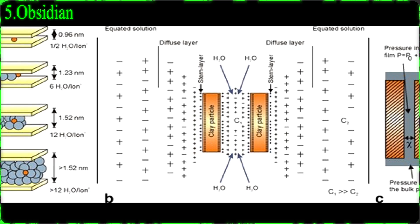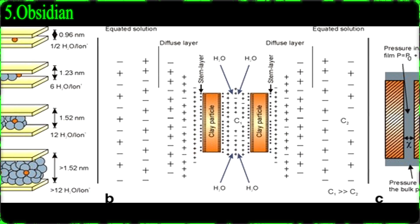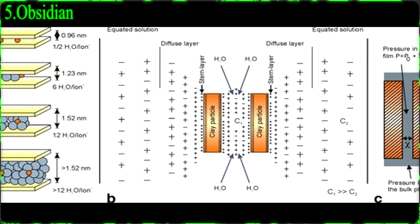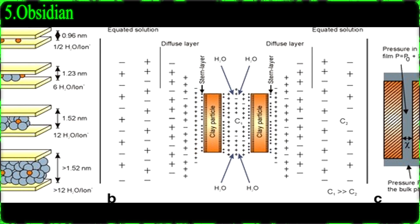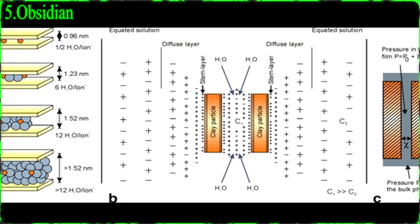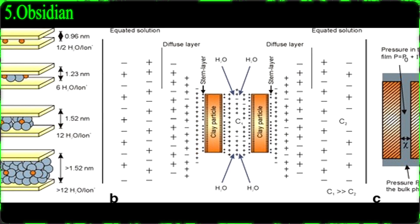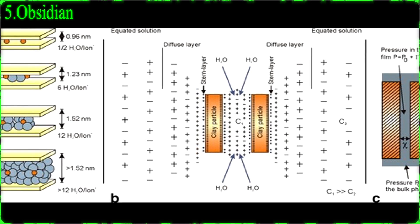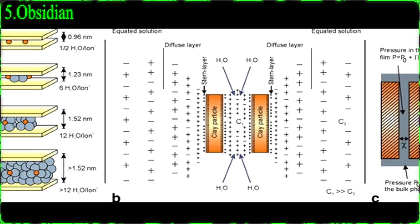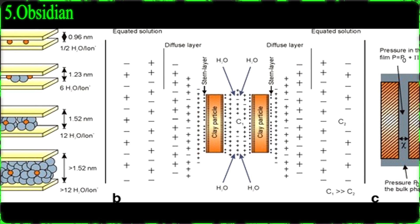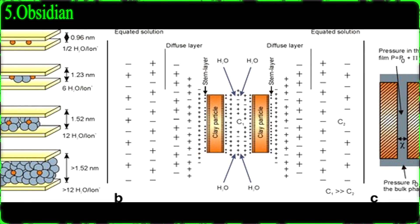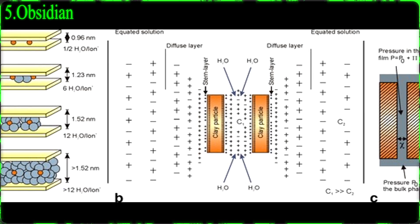When obsidian is exposed to air, the rate at which this happens is constant. When obsidian remains untouched and is fractured, there is typically less than 1% water present. Over time, water slowly leaks into the artifact, forming a narrow rim. This rim is then measured using a number of different techniques such as high-powered microscopes or infrared photoacoustic spectroscopy.